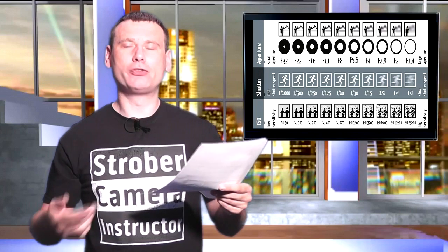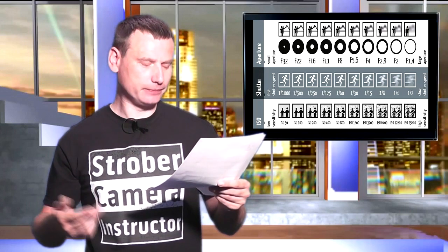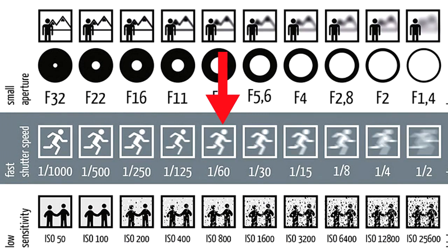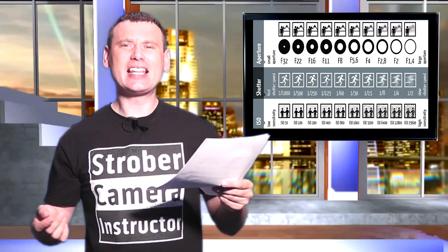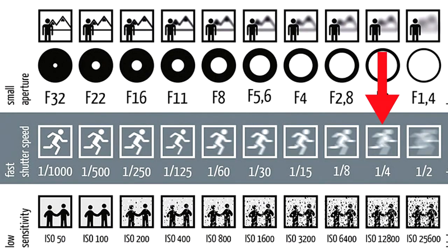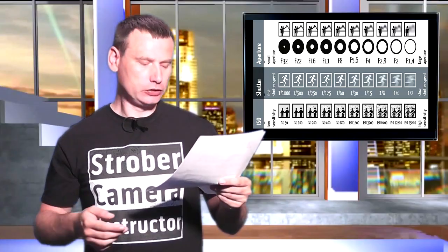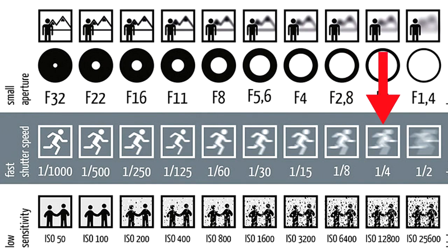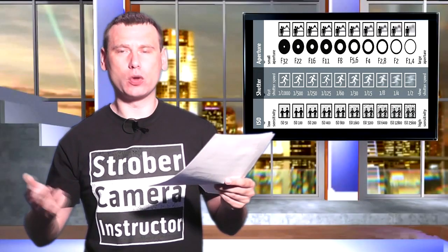Let me give you another example of stops being used with shutter speed. Here we can see that we're on the shutter speed of 1/60th of a second. Now let's say that we moved up to 1/4 of a second. That means that we would have gone up by four stops: 1/60th, one, two, three, four stops. And as you can see, we're now at 1/4 of a second.